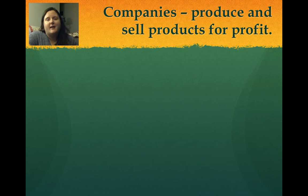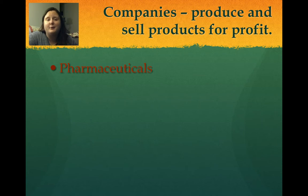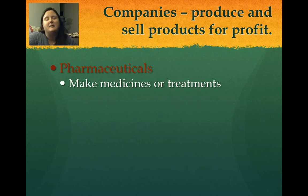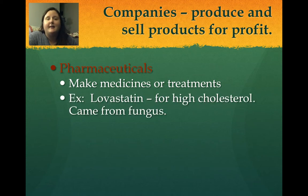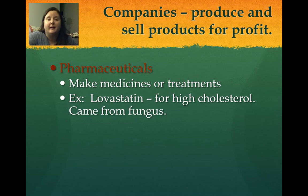There are different types of groups involved in biotechnology. Companies produce and sell products for profit, including pharmaceutical companies, which make medicines or treatments for patients with different illnesses or diseases. An example is lovastatin, a medication given to someone who has high cholesterol, which uses fungus in order to produce the medication.